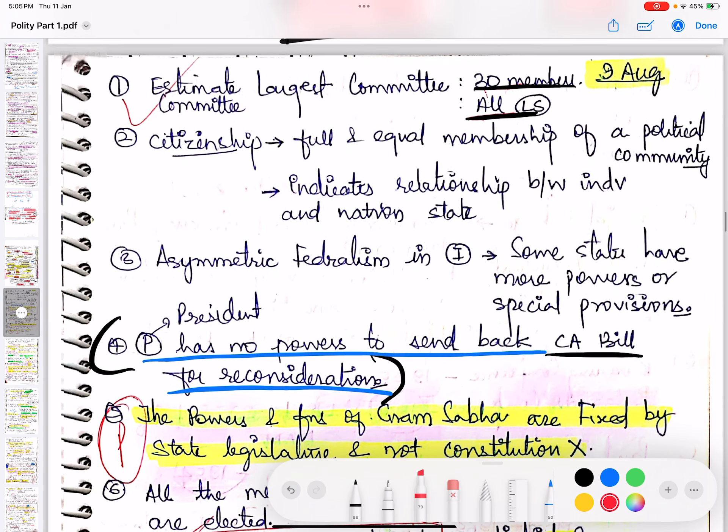Next, Estimates Committee is the largest committee, the largest parliamentary committee with 30 members. Please note all members are from Lok Sabha only.